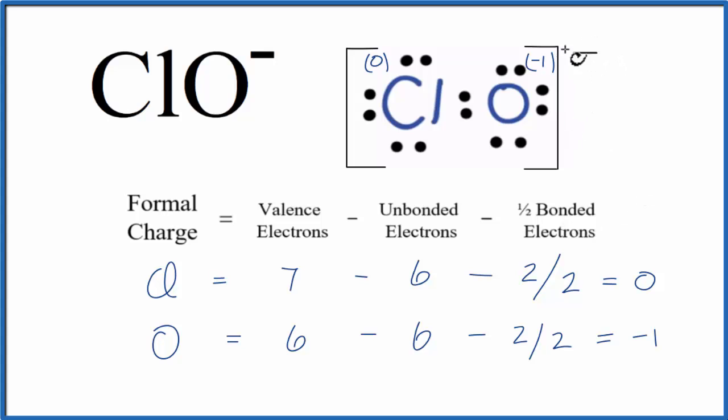And that shouldn't be surprising. We have a negative charge out here, so one of these has to have a negative charge. And oxygen is more electronegative than the chlorine, so it would make sense that the negative is on the oxygen.